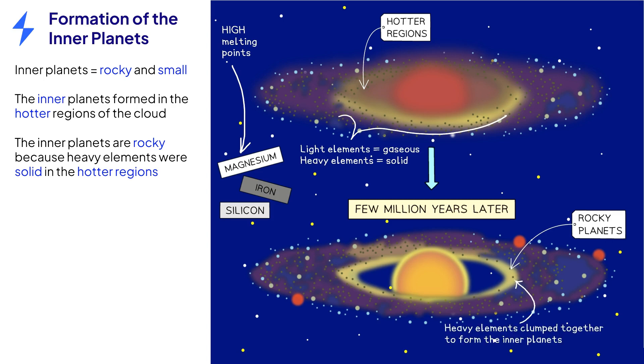For accretion to take place, elements have to be solid. This is why only the heavy elements could clump together nearer the Sun. In the initial cloud, the concentration of heavy elements would have been extremely low. This is the reason the inner planets are small.